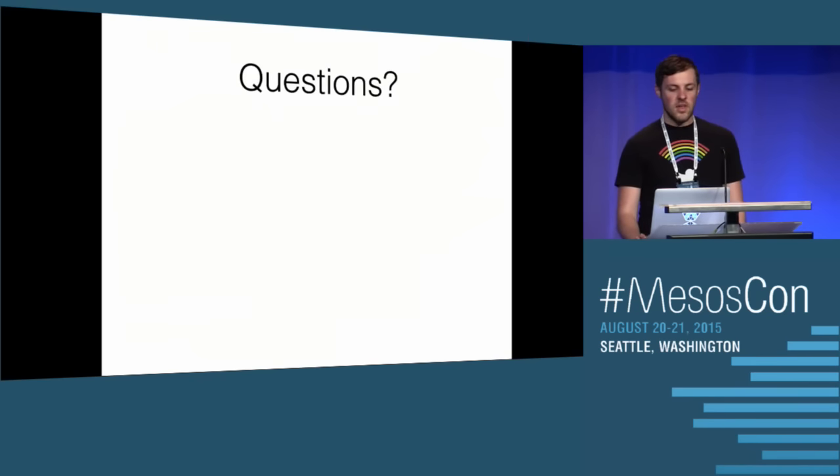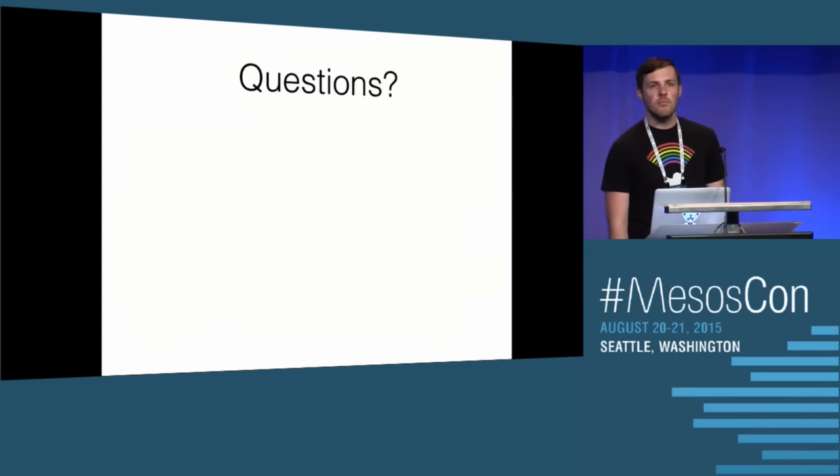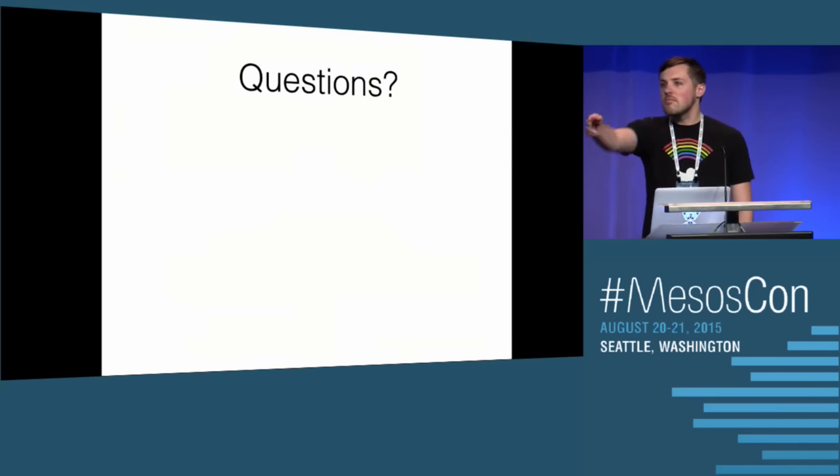We've got about eight minutes for questions. The first question: the log entry struct has another field called transaction — is task config denormalized there as well? And the answer is yes, it is.